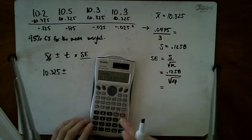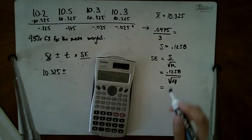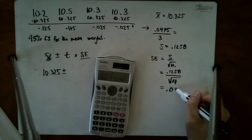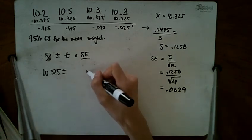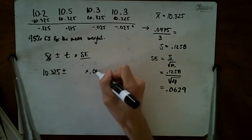So it's 0.125 divided by 2. My standard error is 0.0629. Times my standard error of 0.0629, and now all I have to do is find my critical t.